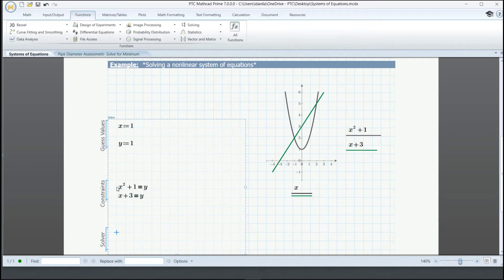In the solver part, we use the Find function, again from the Solving panel, to get x and y. And we can remove this extra space. Now, let's evaluate r and get our roots.